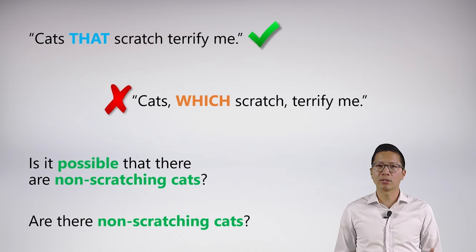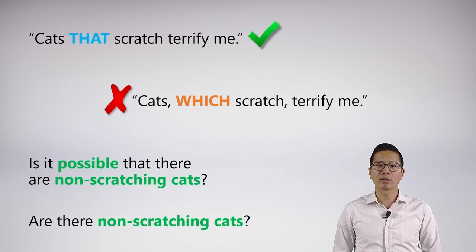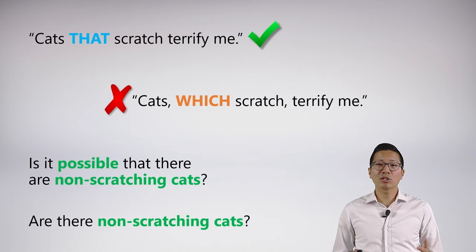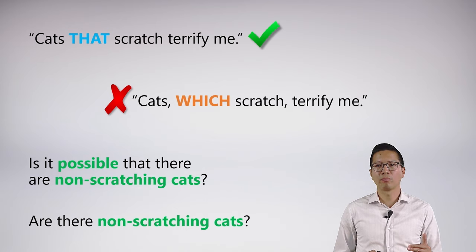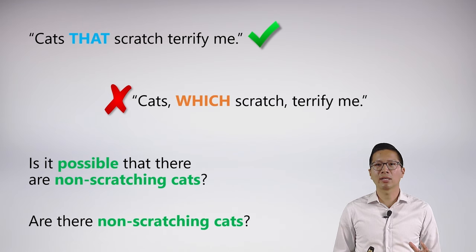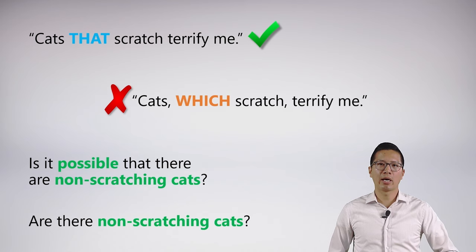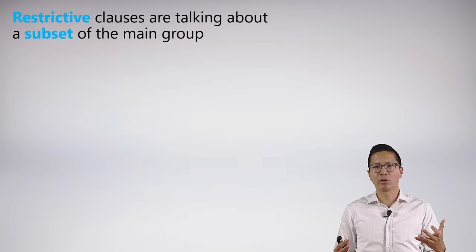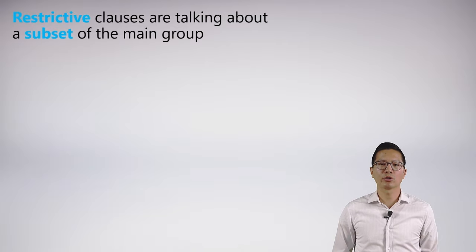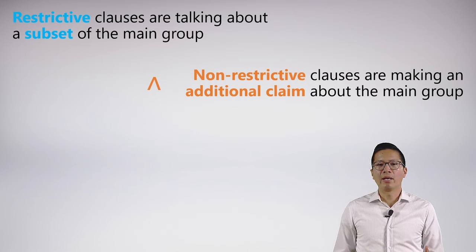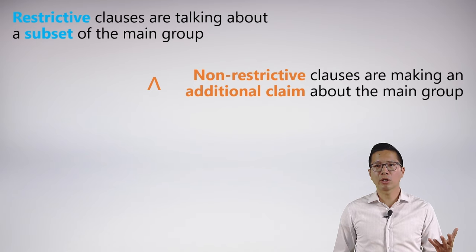If I say the non-restricted case, it is true that there are no such things as non-scratching cats. But in the restricted case — 'the cats that scratch terrify me' — I'm actually not even asserting that there are cats that don't scratch. Now if this seems a bit unclear, it's because it is, and we're not really well equipped to tackle this case until we add more to our logical apparatus, which we'll be doing in Unit 5. What you need to know now is that restrictive clauses are talking about some subset of the main group — not all cats, but the cats that scratch. And non-restrictive clauses are making some additional claim about the main group.